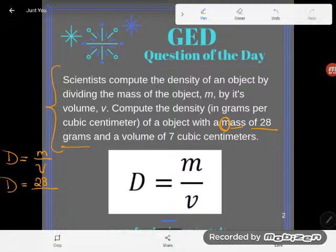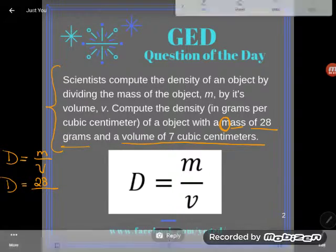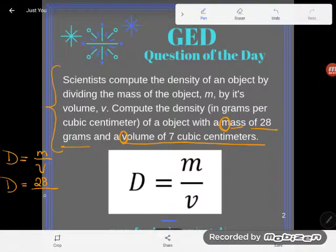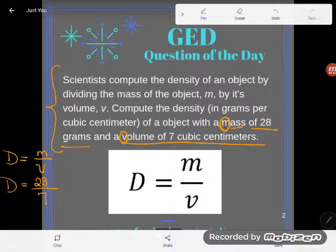Okay, and one more thing I see. I see that my object has a volume of 7 cubic centimeters. A volume, v, stands for volume in my formula. So I'm going to plug in 7 cubic centimeters down there.